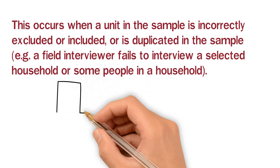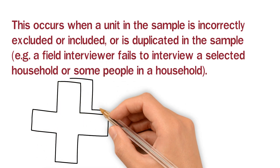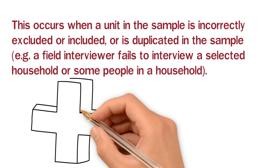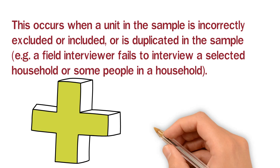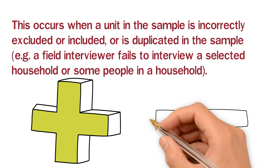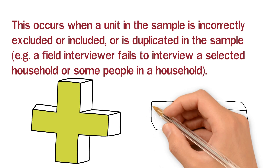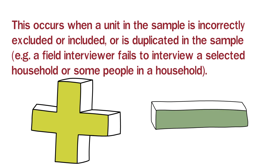For example, let's suppose I have a house and I need to perform my analysis on all the people living inside that house. Let's suppose there are 10 permanent members of that house. If I only collected results from 9 of those 10 people, that means I did not properly cover the area of that house — that is a coverage error. Or suppose I also collected data from the maid who only comes for one hour in the morning — including or excluding a unit that should not have been part of my sample, or failing to cover one that should have been, is also a coverage error. For example, a field interviewer fails to interview a selected household or some people in a household.